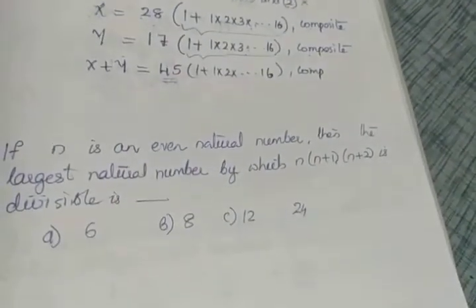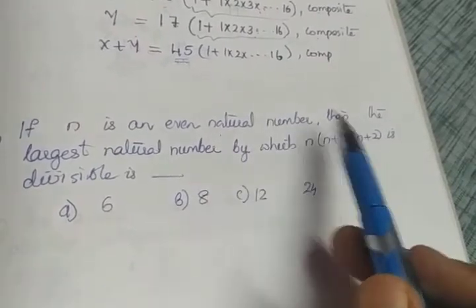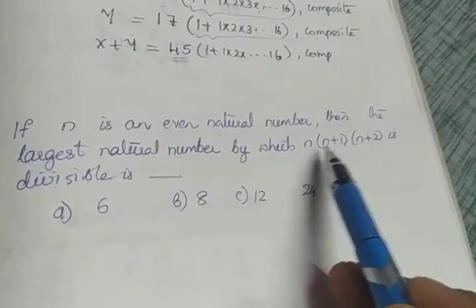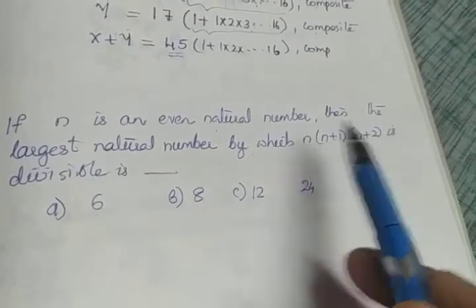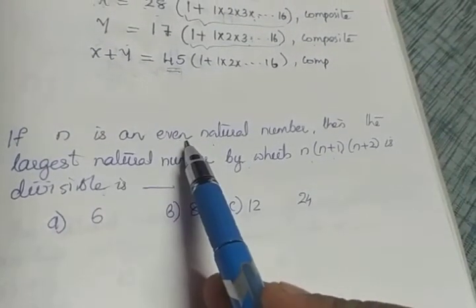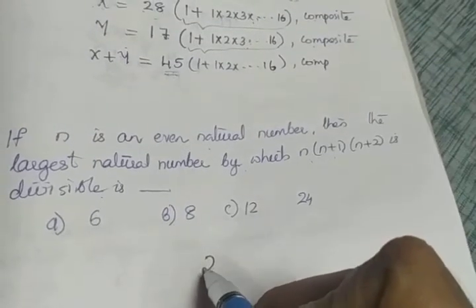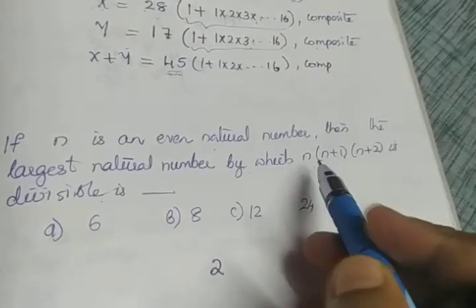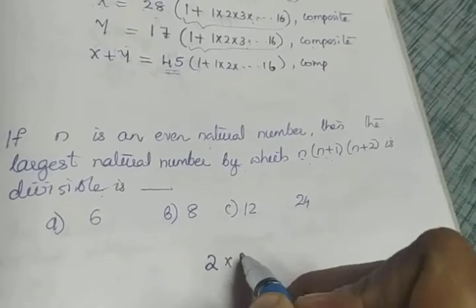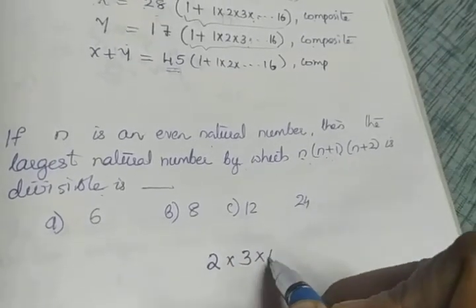Moving to the next question: if n is an even natural number, find the largest natural number by which n×(n+1)×(n+2) is divisible. We take an example — let n equal 2, an even natural number. Then n+1 is 3 and n+2 is 4.